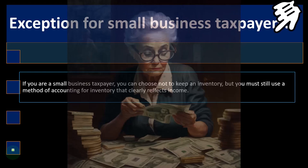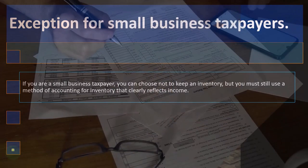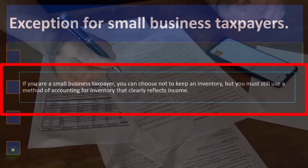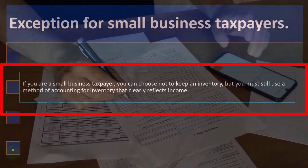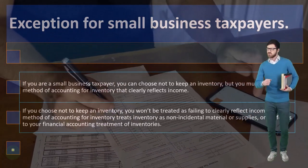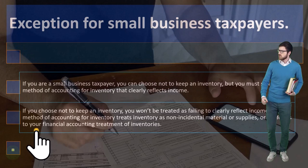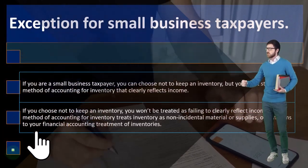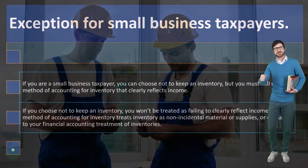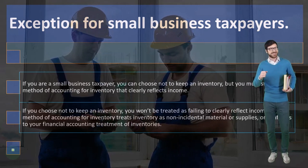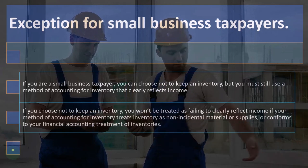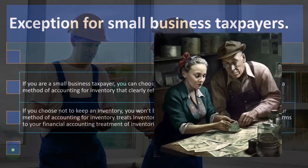Exception for small business taxpayers: if you are a small business taxpayer, you can choose not to keep an inventory, but you must still use a method of accounting for inventory that clearly reflects income. If you choose not to keep an inventory, you won't be treated as failing to clearly reflect income if your method treats inventory as non-incidental material or supplies, or conforms to your financial accounting treatment of inventories.